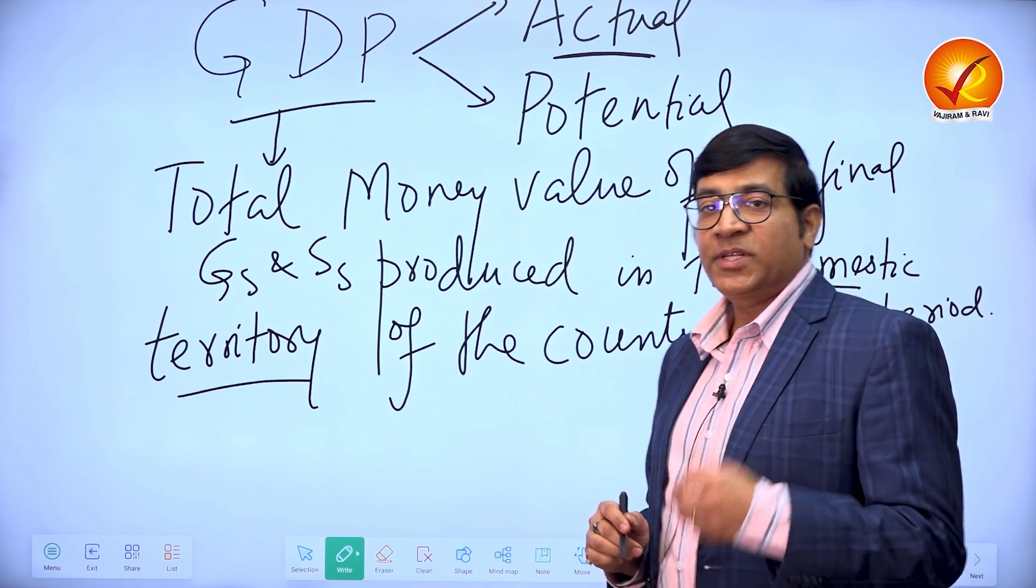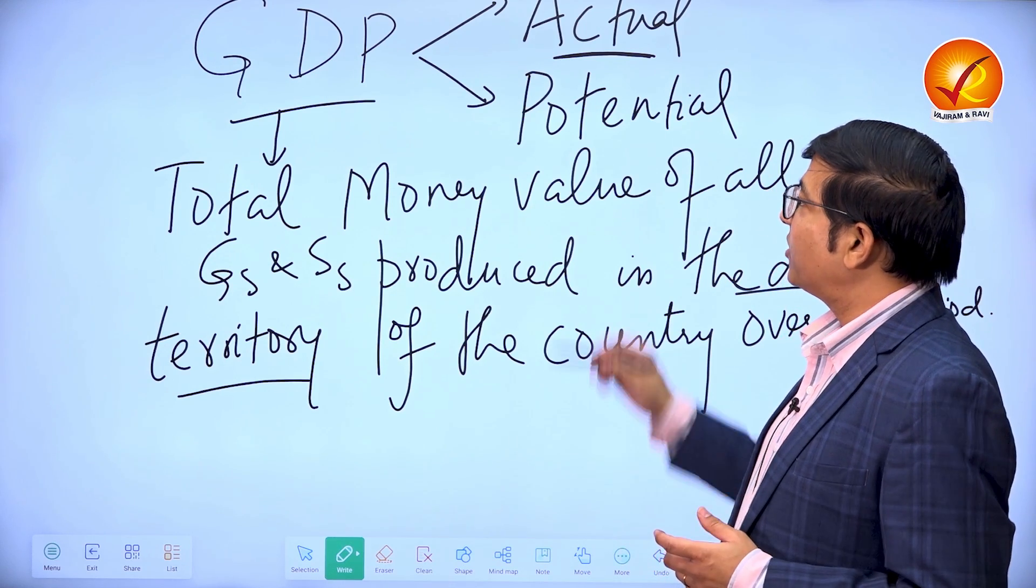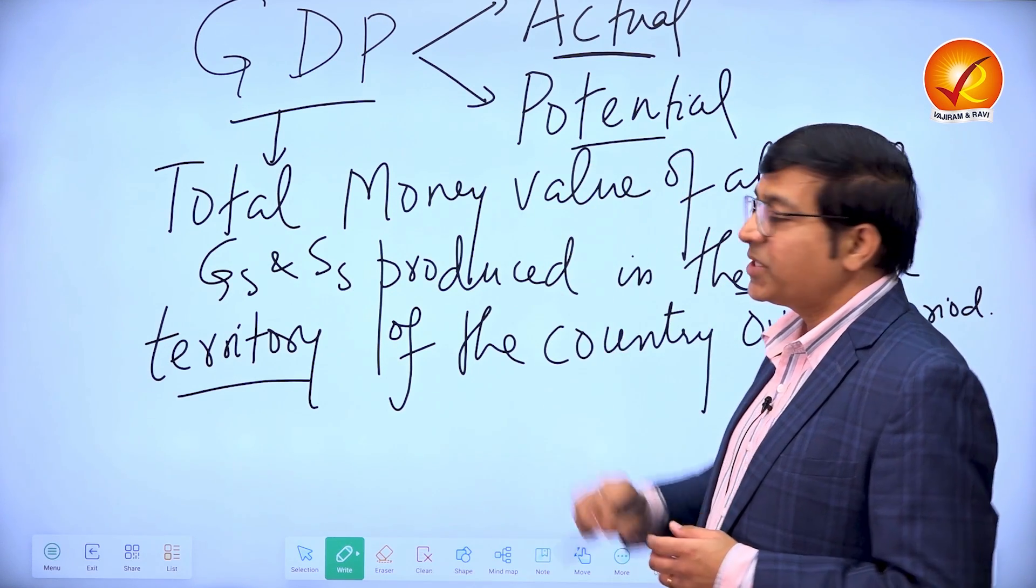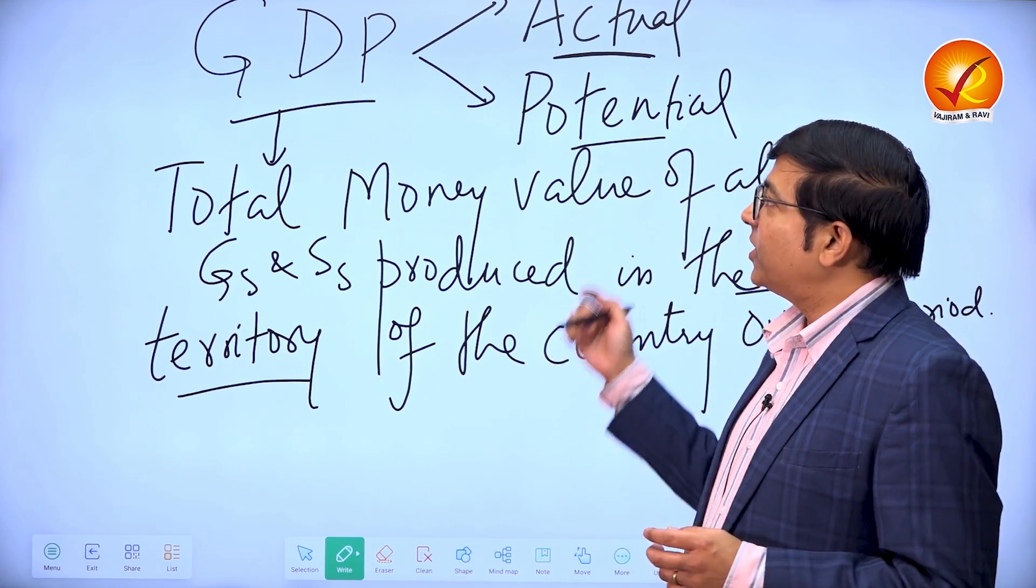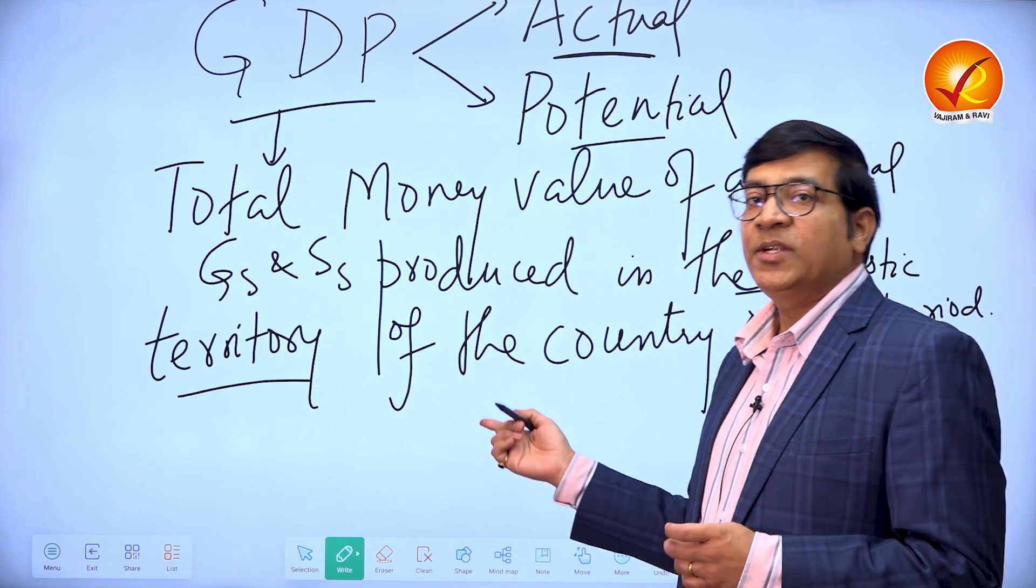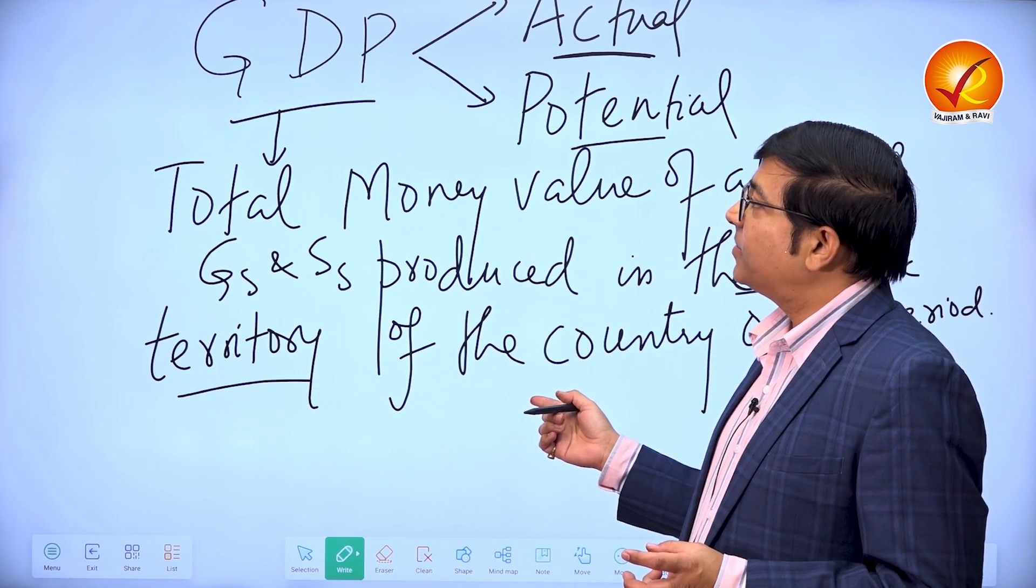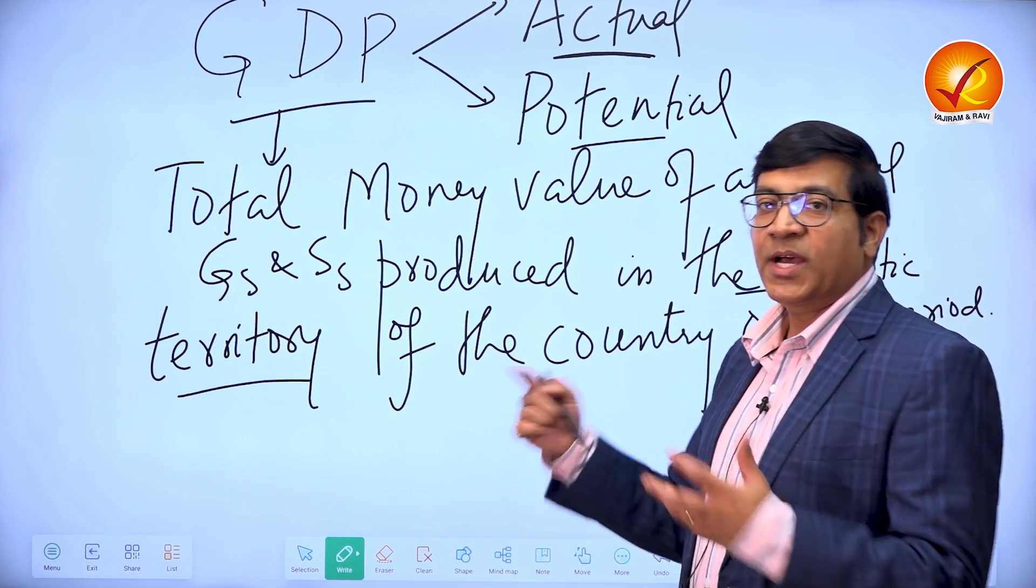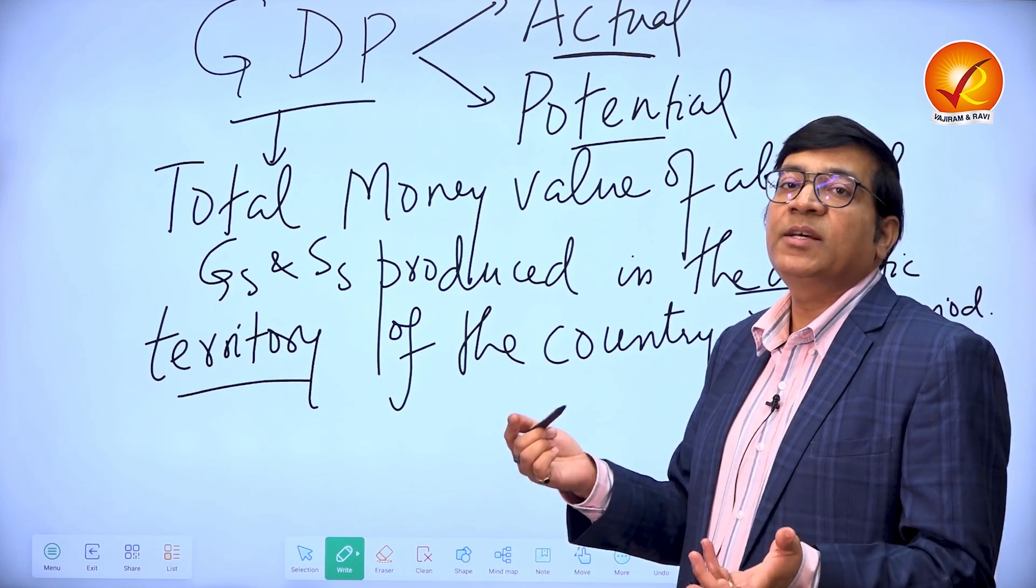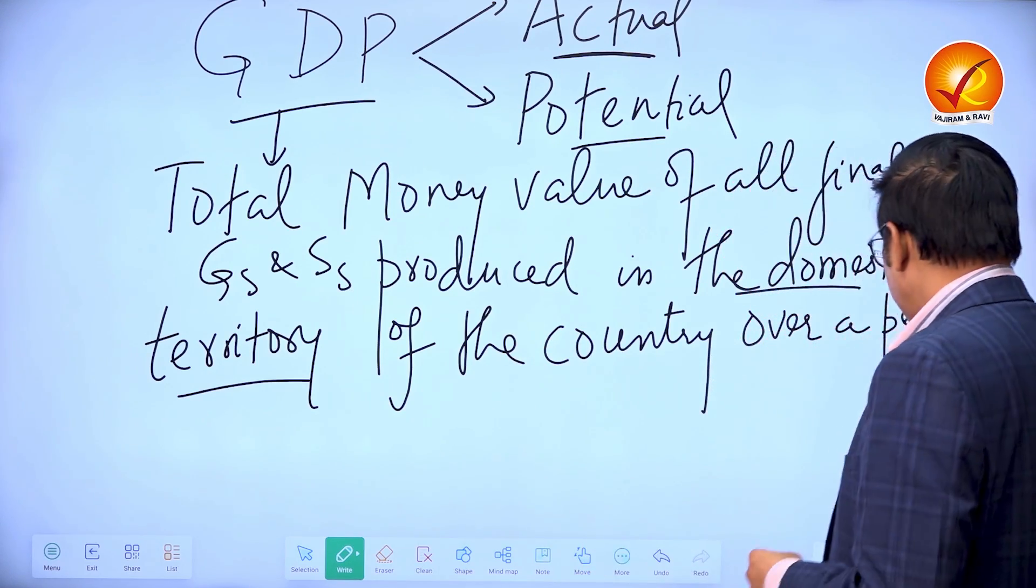But in one of the paper three questions few years ago, they had also asked a question on potential GDP. So what is the difference between the two, and what generally is lower or higher and what other questions can come on such an issue.